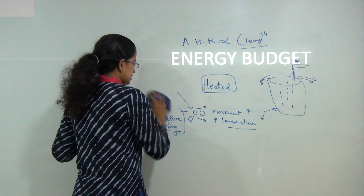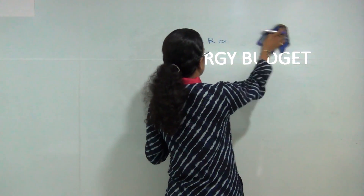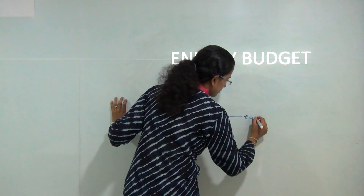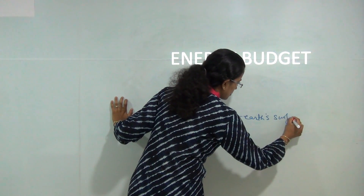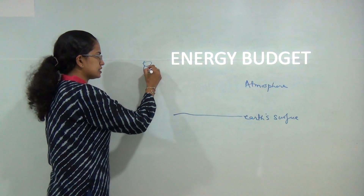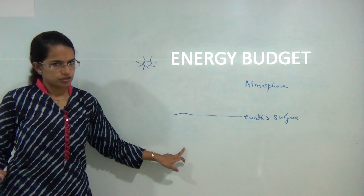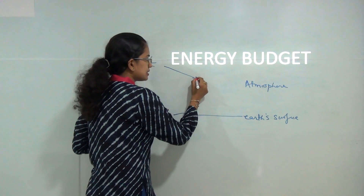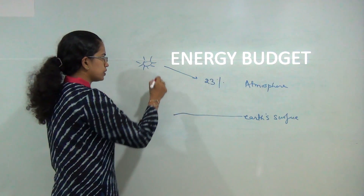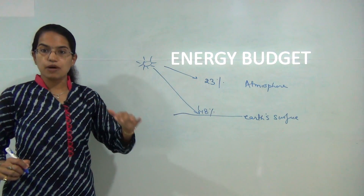An important fact before we discuss radiation flow: consider the Earth's surface at the bottom and the Earth's atmosphere on top. The incoming solar radiation or insolation is either absorbed by the atmosphere or by the surface. The amount absorbed by the atmosphere is merely 23 percent, in contrast to 48 percent absorbed by the Earth's surface.